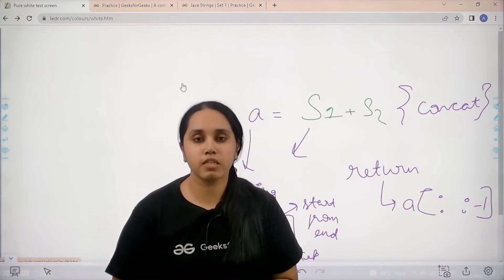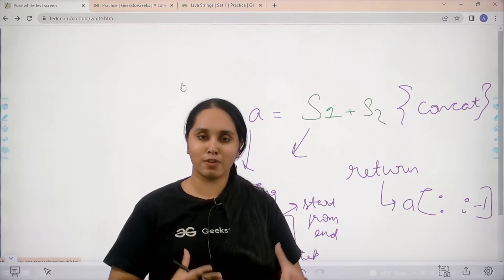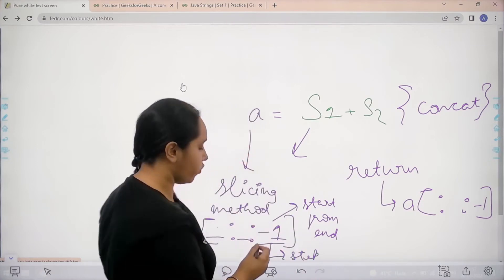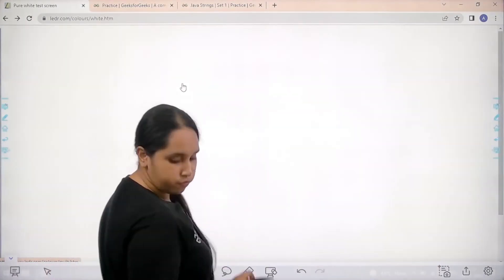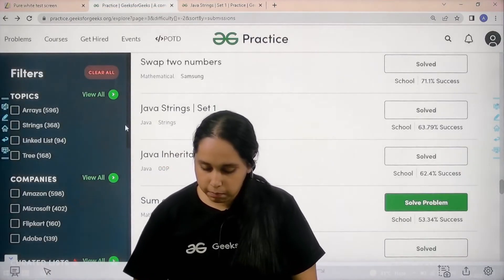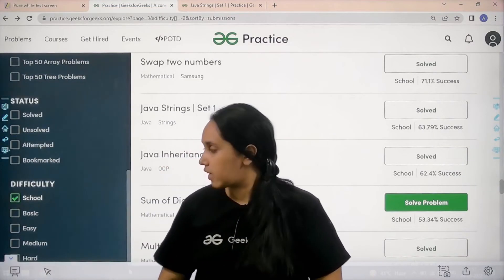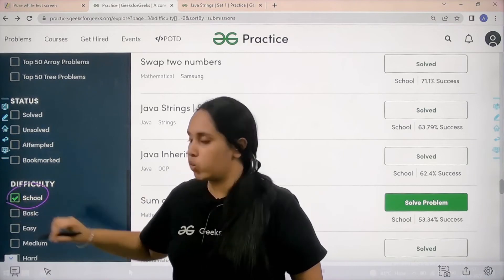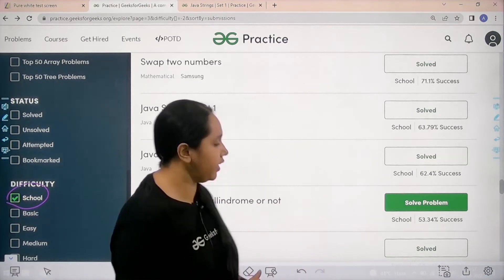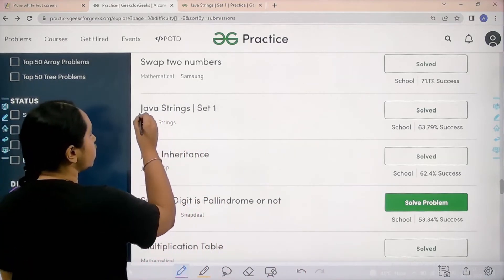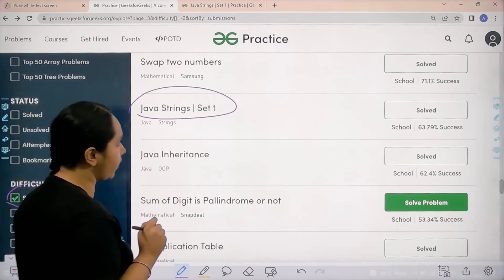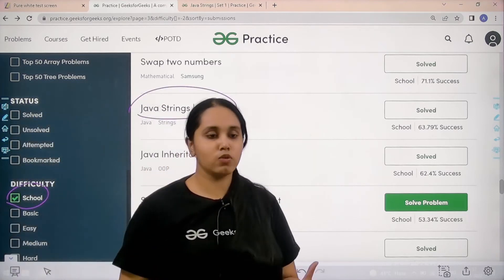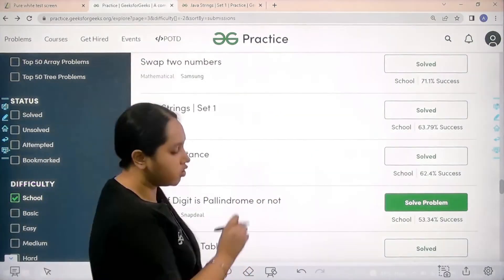So I hope the concept is clear to all of you and you guys are ready for the solution. So let's move forward to that part. So first you guys need to go to the practice portal. In practice portal, in the difficulty level, you need to choose school, and then you need to find the question java string set 1. After you find it, you need to click on solve.